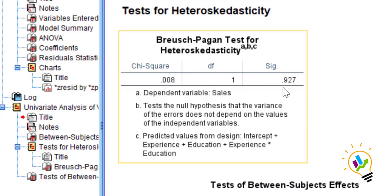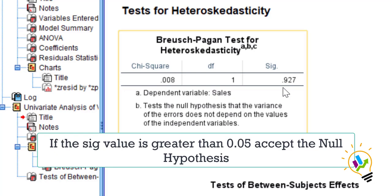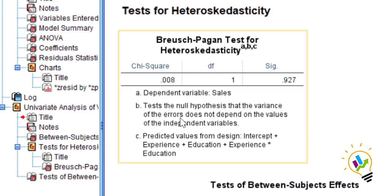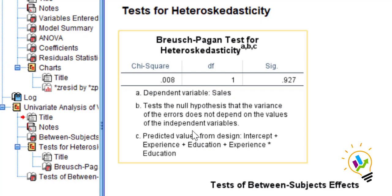The significant value is 0.927, which is more than 0.05. When the significant value is more than 0.05, we accept the null hypothesis — meaning there is no relationship between residuals and the independent variable. The variance of the error does not depend on the values of the independent variable, so the data has homoscedasticity.